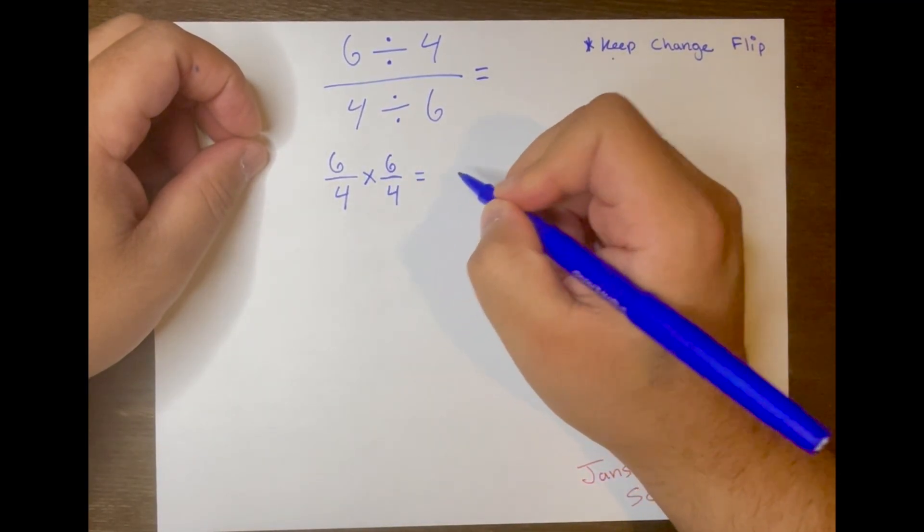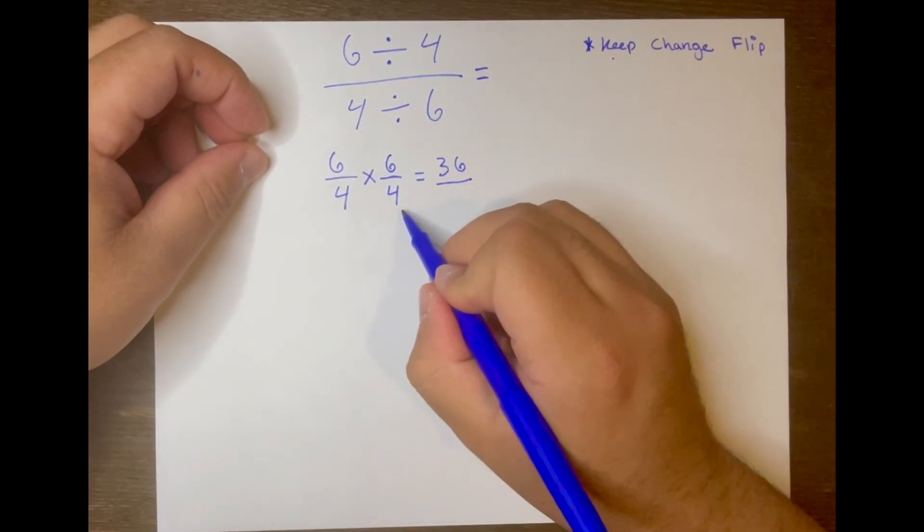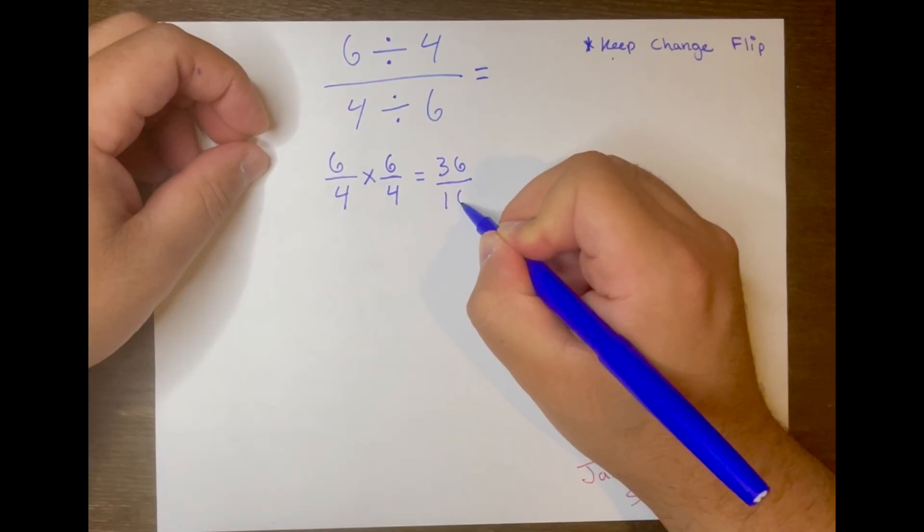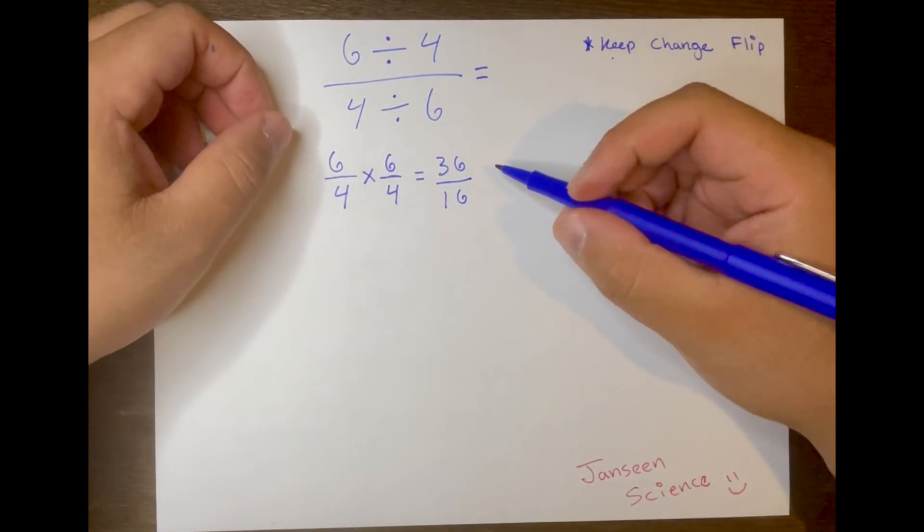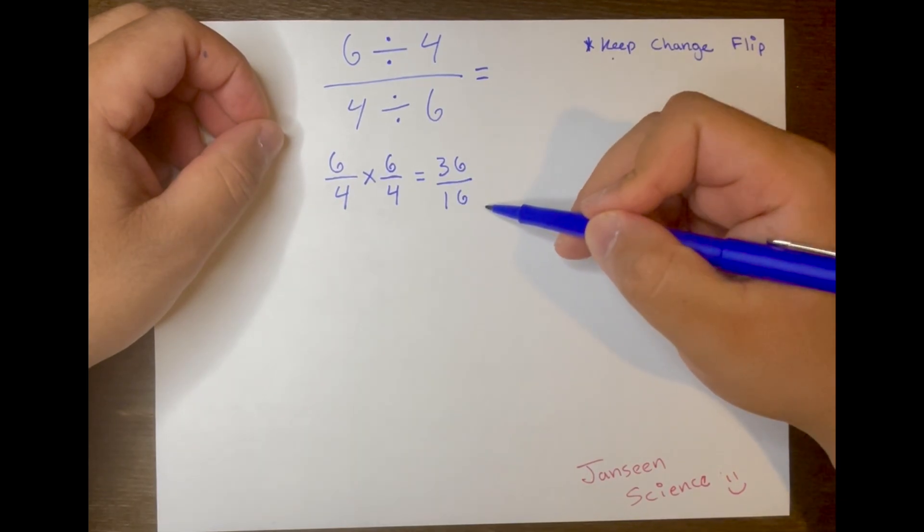Then we multiply across. 6 times 6 equals 36, 4 times 4 equals 16. Now we need to simplify this fraction, 36 over 16.